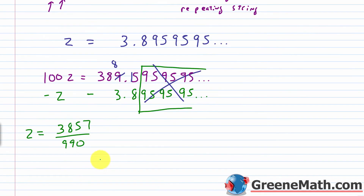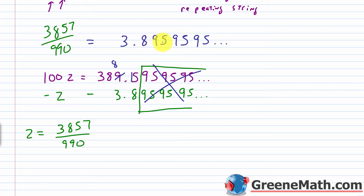Going back, z was equal to the original repeating decimal, so 3857 over 990 equals 3.895 with a bar over the 9 and 5, meaning that series of digits repeats forever. Punch 3857 divided by 990 into a calculator and you'll see this — though the calculator will either truncate ending with a 5, or round up and show a 6 as the very final digit.